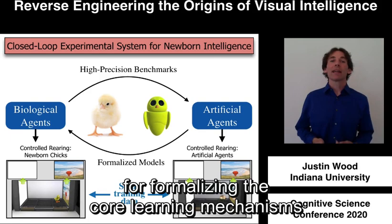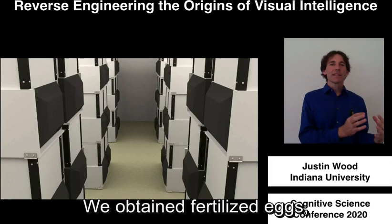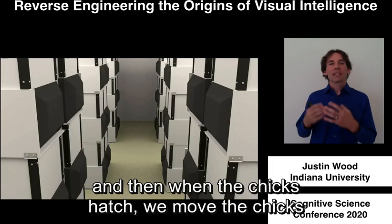Let me start by telling you about the controlled rearing component of our research. We obtain fertilized eggs, we incubate the eggs in darkness, and then when the chicks hatch, we move the chicks to the controlled rearing chambers, again in complete darkness.